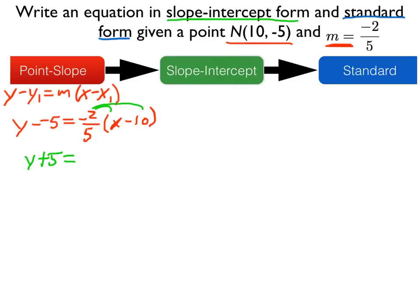So that gives us negative 2 fifths x, plus, since we're taking a negative times a negative, plus 10 times 2 is 20, so 20 fifths. And 20 fifths can simplify to plus 4, because 5 goes into 20 four times. Now to get it into true slope-intercept form, we'll subtract 5 from both sides. And so we have y equals negative 2 fifths x minus 1.